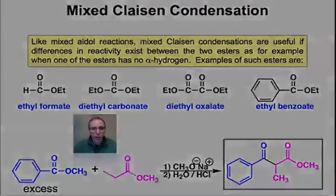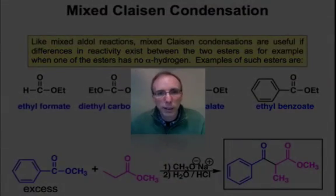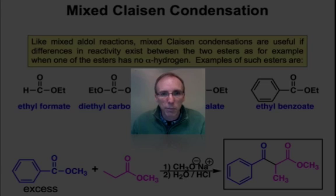In this webcast, we've seen that the Claisen condensation is a very useful reaction, analogous to the aldol condensation, for making β-keto esters — a type of 1,3-dicarbonyl compound. In the next webcast, we'll take a look at some other chemistry of 1,3-dicarbonyl compounds.